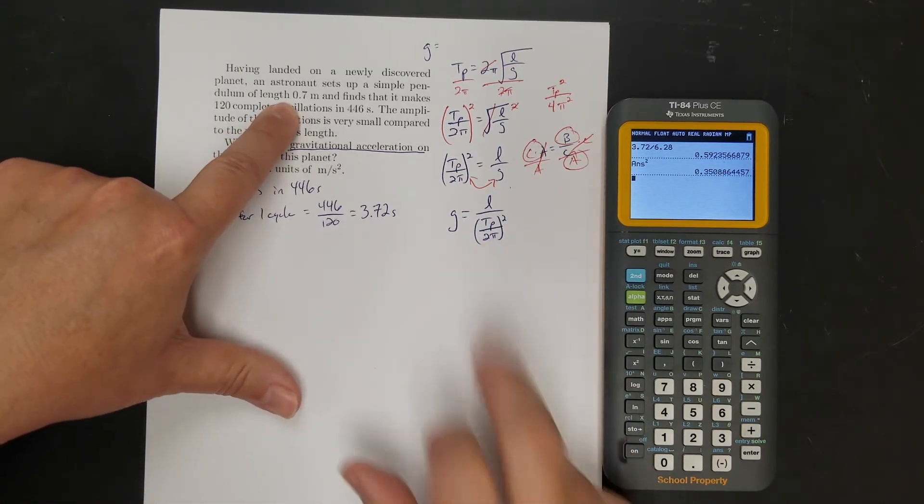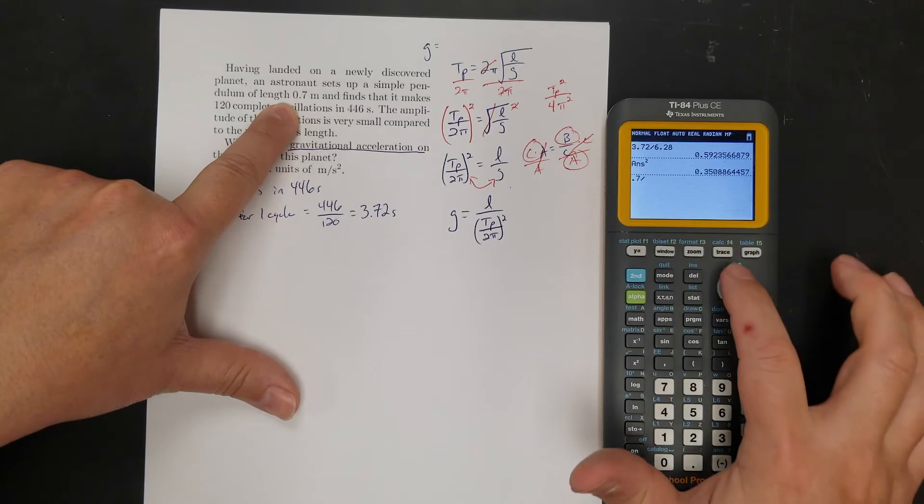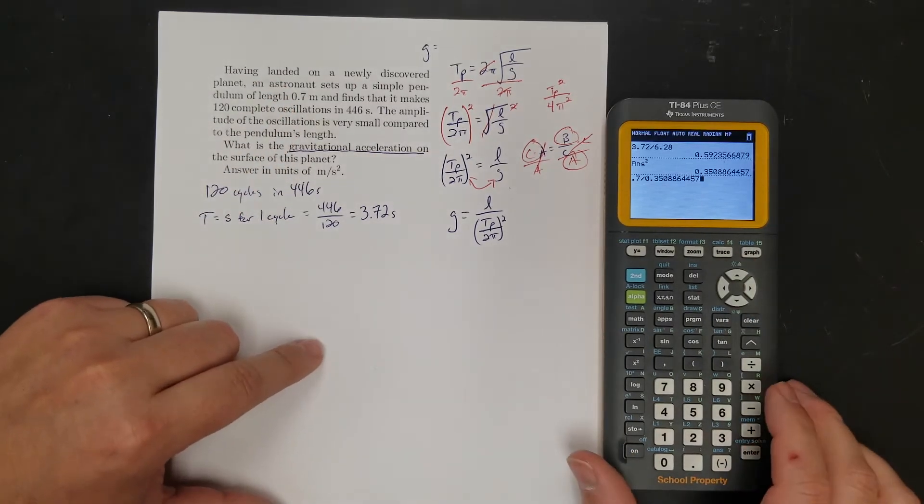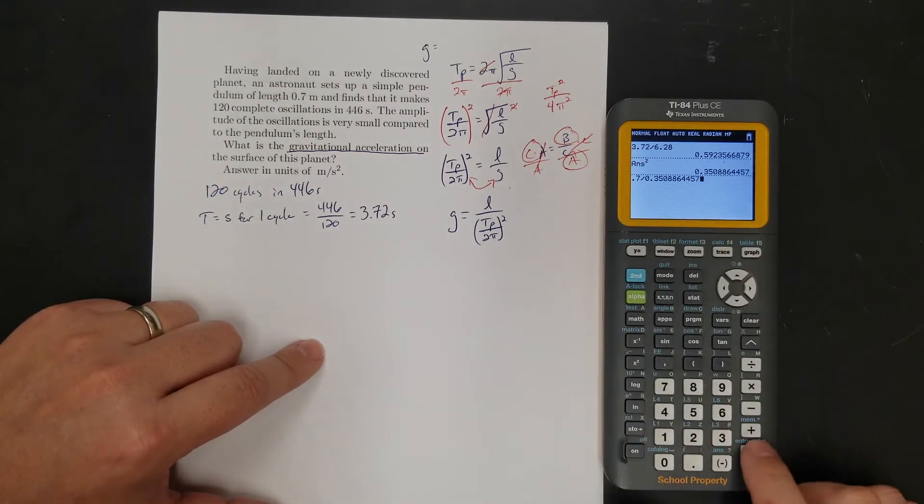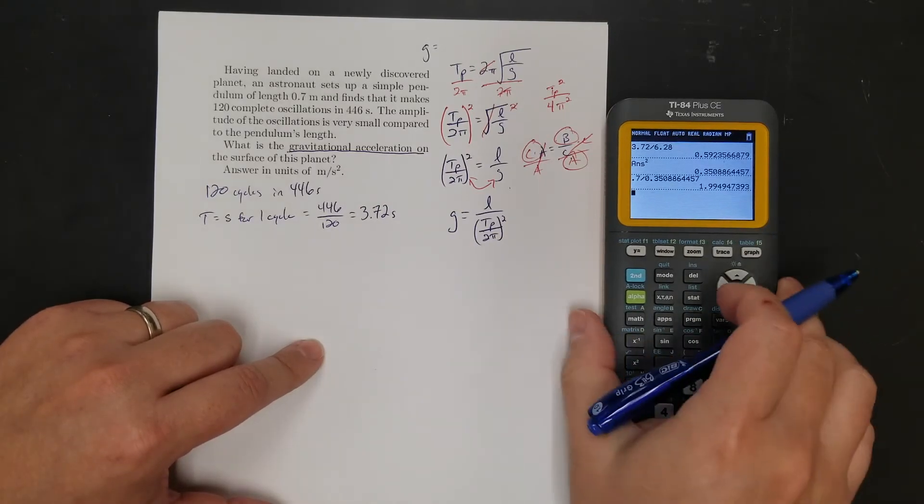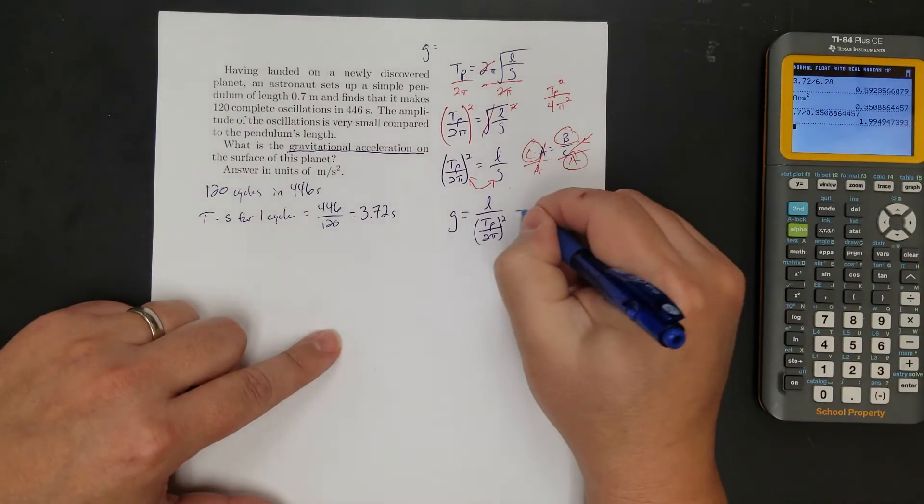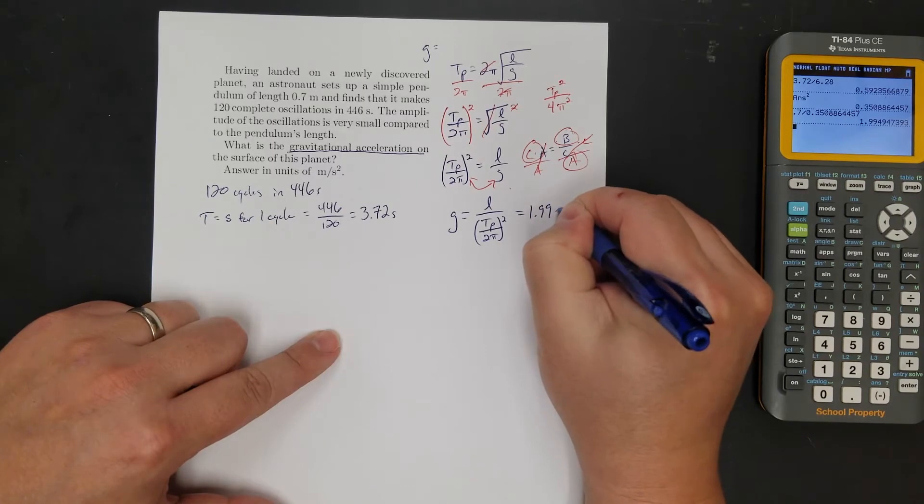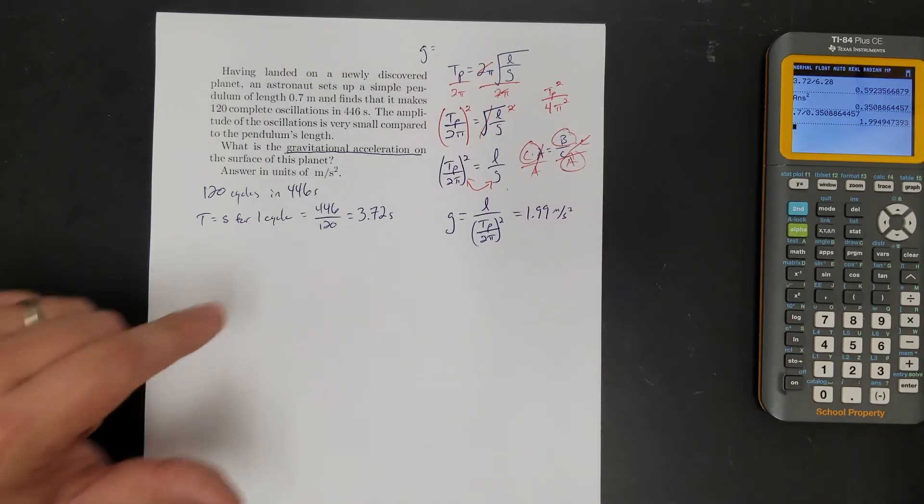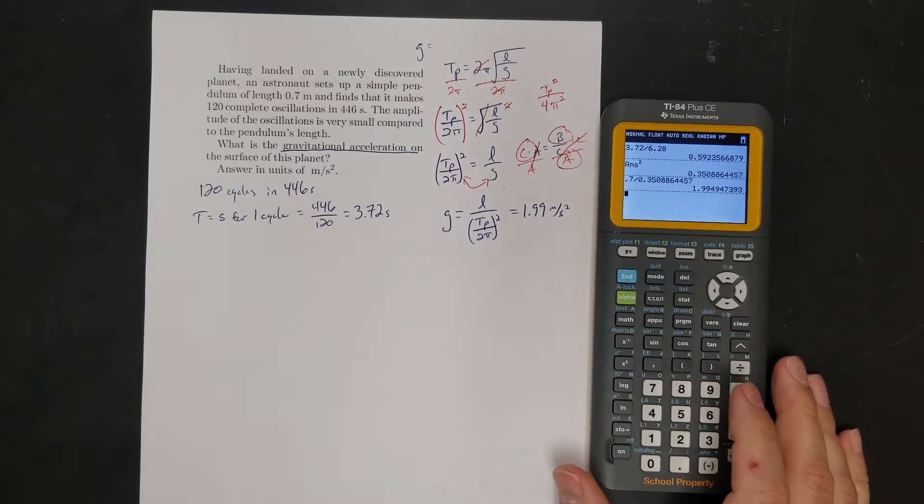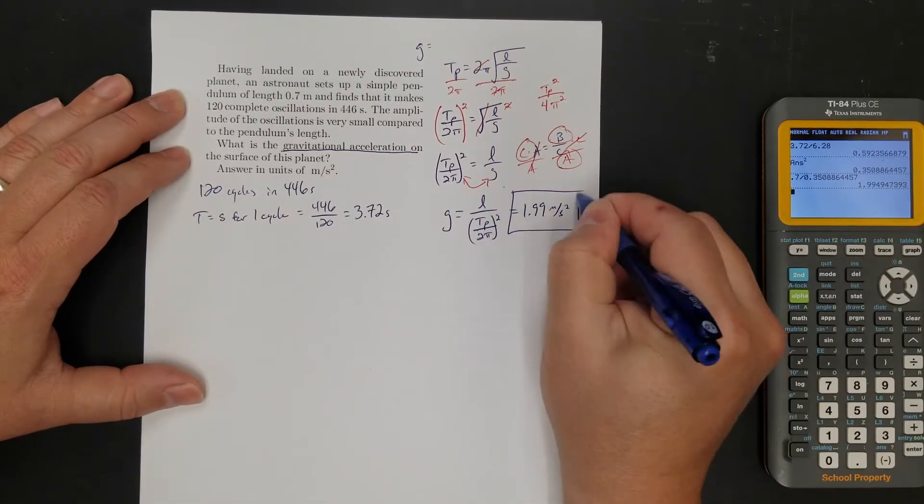Now I'm going to do the length divided by that. So the length it said was 0.7 meters. So 0.7 divided by that number I got before. And that means G is 1.99, 1.99 meters per second squared. So I don't know. They landed on a planet a little bit bigger than the moon. Our moon. Okay, but that's solving that.